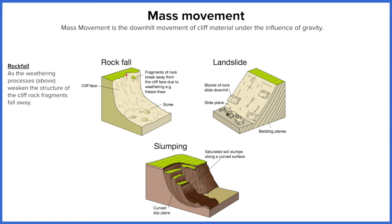Things like biological weathering and freeze-thaw weathering erode small chunks of the cliff to the point where they can no longer withstand the pressure and fall away. These are small chunks — boulders — but nothing bigger.